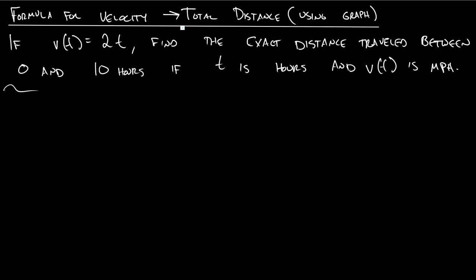Here we see we're given an equation that gives us velocity. The velocity at time t is given by 2 times t. This is in miles per hour and t is in hours.